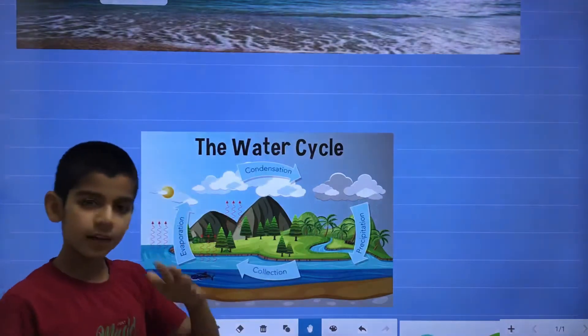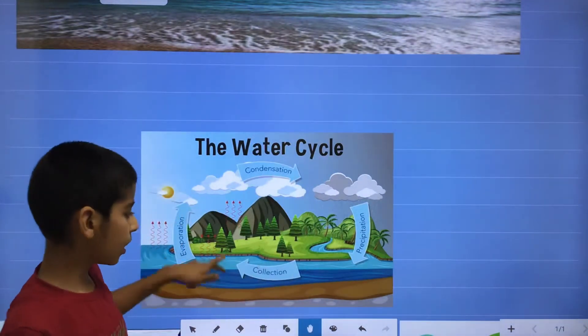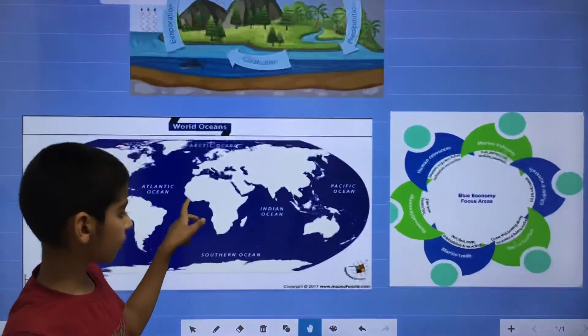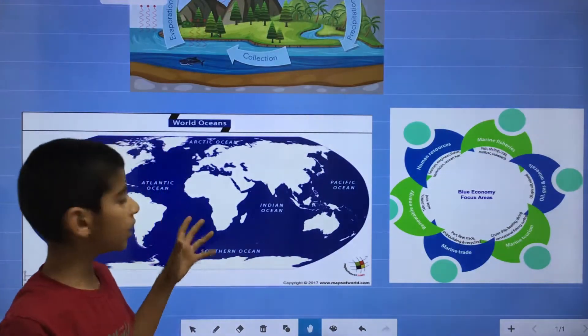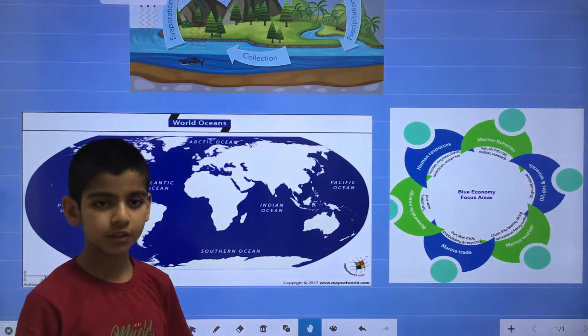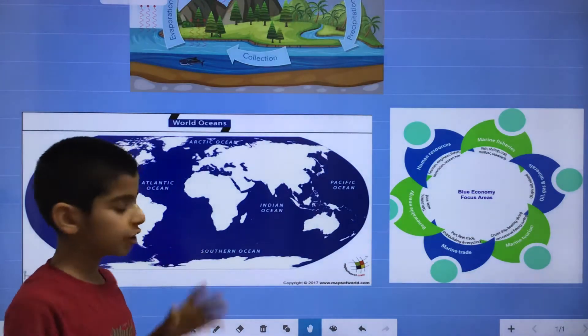And then it is runoff. Now we will talk about the oceans. The earth's 70% surface is covered by what? Oceans or water.